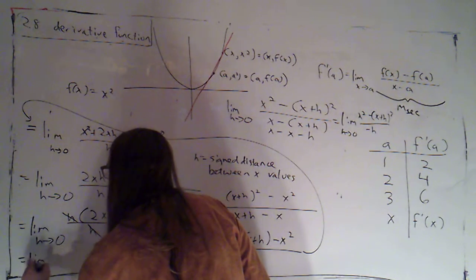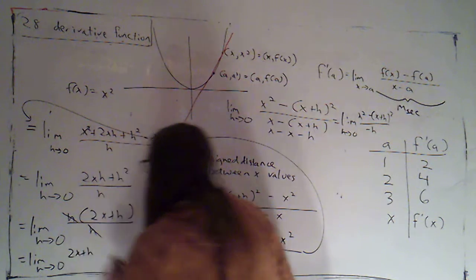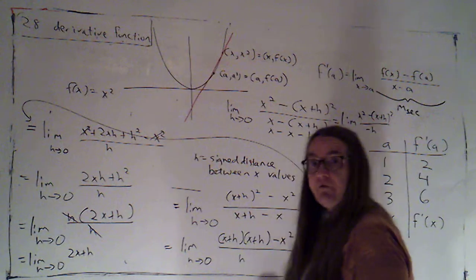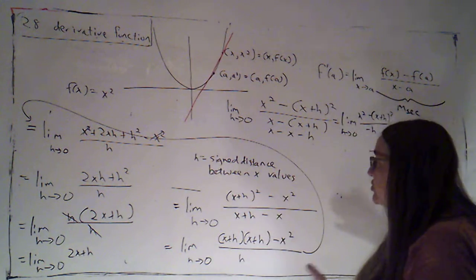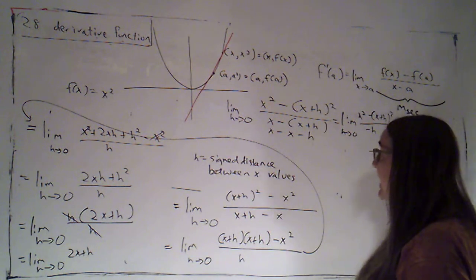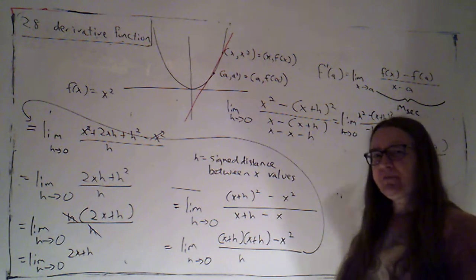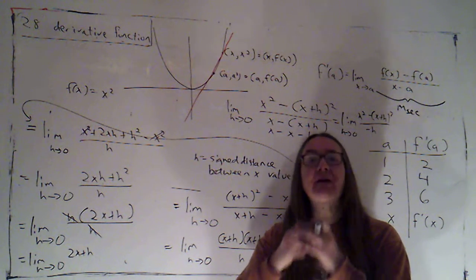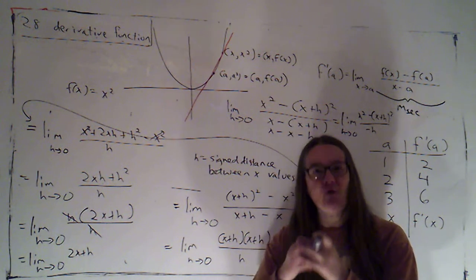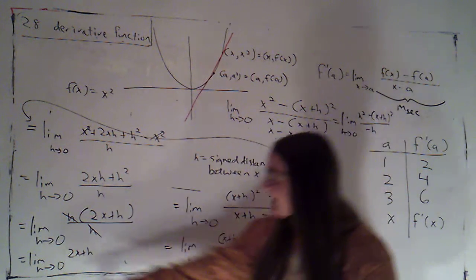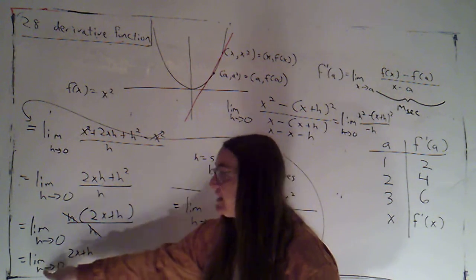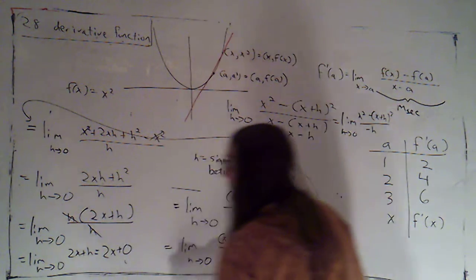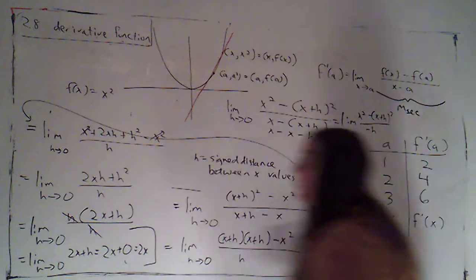I cancel that. We get the limit as h goes to zero of 2x plus h. Notice here I can now plug in zero for h. h was my variable this entire time. x is a variable that's playing a different role. x in this case is representing a fixed but unspecified number. It's my point of tangency. h is the thing that's actually changing. It's getting closer and closer to zero. So when I'm plugging in, I'm plugging in zero for h and we get 2x.